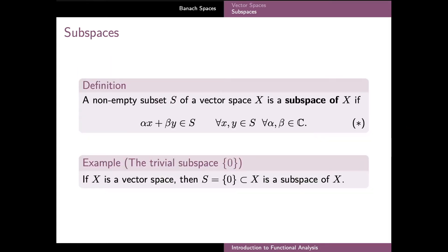Probably the easiest example of a subspace is a set containing a single element only — the zero element of the vector space X. This set is indeed a subspace, and the proof is presented in detail in the lecture notes. This subspace containing only the zero element is known as the trivial subspace. Correspondingly, subspaces which contain at least one other element besides the zero element are called non-trivial.